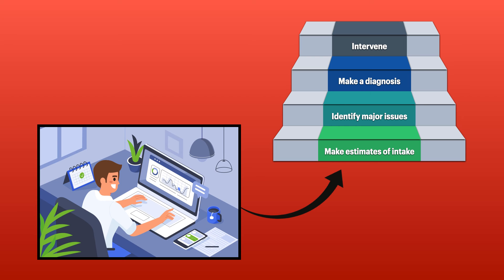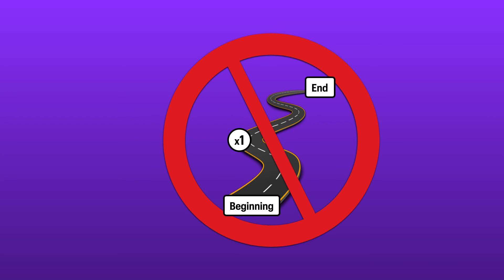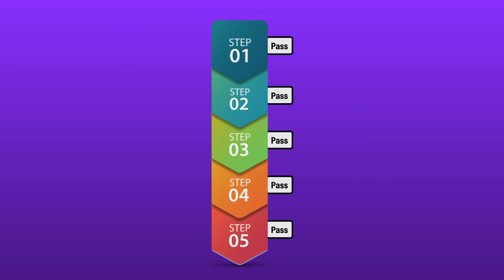Now you should be able to use everything you gathered to make estimates of intake, identify major issues, form a nutrition diagnosis, and plan an intervention. In summary, with the multiple-pass method, the dietitian doesn't just go from beginning to end one time to get all of the details. Instead, they gather information in layers, adding a little bit more information with each pass.